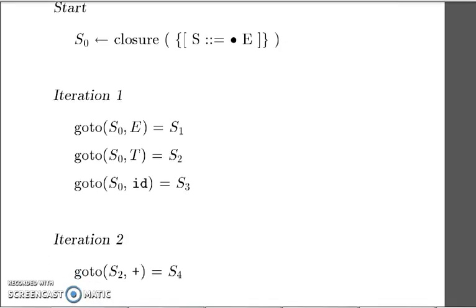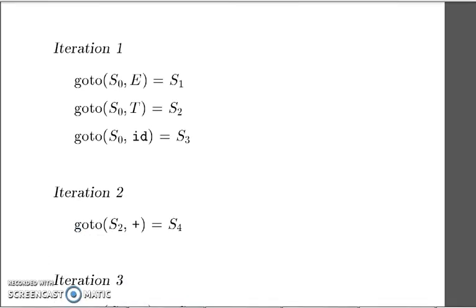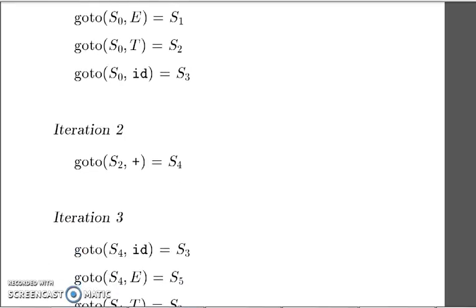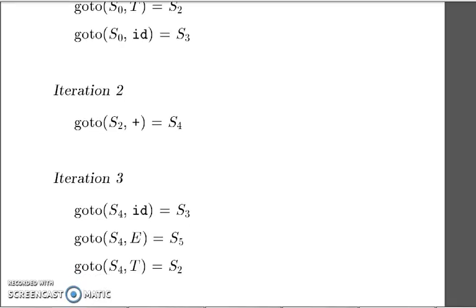In the second iteration, we will be stationed at S2. From S2, there is only one possibility that the symbol plus can be read, so ultimately the next state has to be a new state, that is S4. During iteration from state S4, I will try to read the ID, capital E, and capital T. ID is a terminal symbol whereas E and T are non-terminals. Subsequently we have the states S3, S5, and S2 getting mapped.